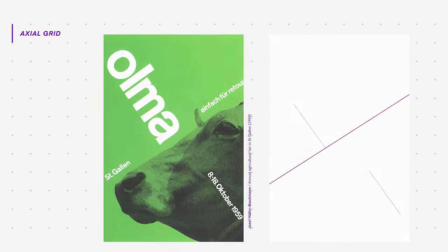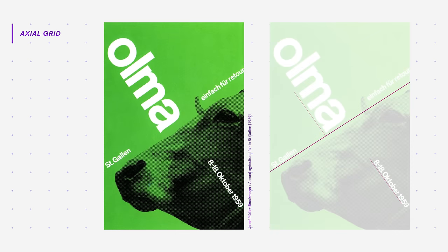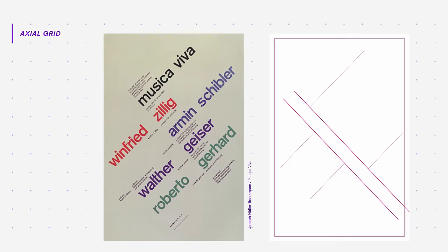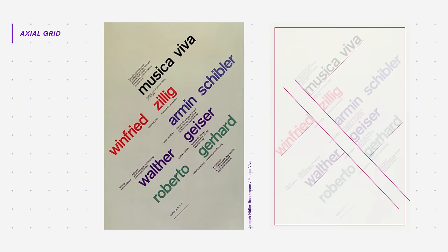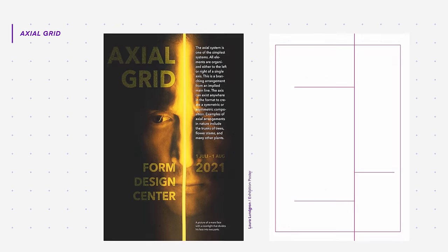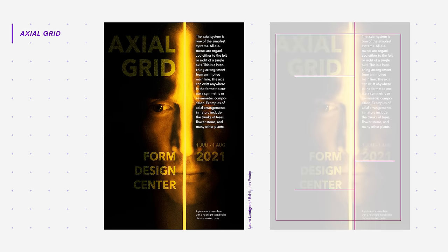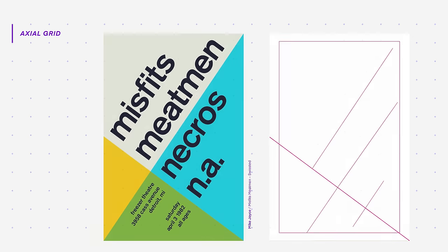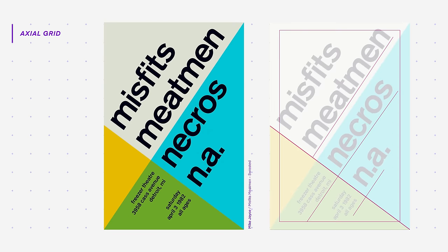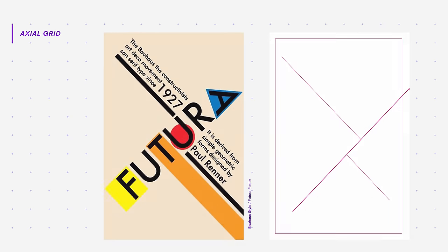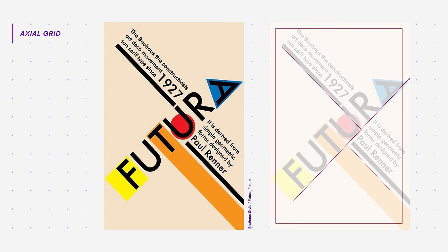Axial grids are more custom and are not easily generated in software such as Photoshop, InDesign, or Illustrator, so one will typically have to create this themselves. The axis line can exist anywhere in a system, which can create a symmetrical or asymmetrical composition. Because of their simplicity, content can look really striking and edgy when aligned to an axial grid. They can be used to great effect in more impactful designs like posters, leaflets, and flyers, where you want to capture more energy and movement.